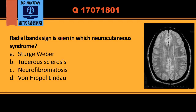The radial bands sign is seen in tuberous sclerosis. These are hyperintense lines going from the ventricle to the cortex.